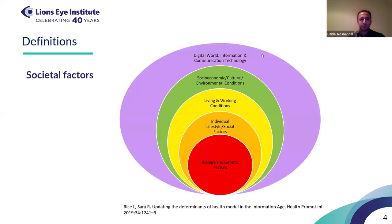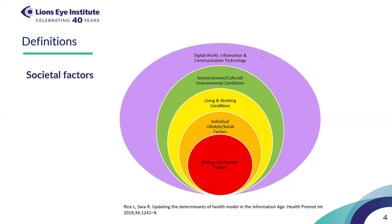Specifically for what I'm going to talk about tonight, we're talking about societal factors, which are usually evaluated at different levels. The first level is biology and genetic factors. Also at the next level, individual lifestyle and societal factors. There's also living and working conditions, socioeconomic, cultural and environmental conditions, and the recently added digital world, which includes information communication technology.